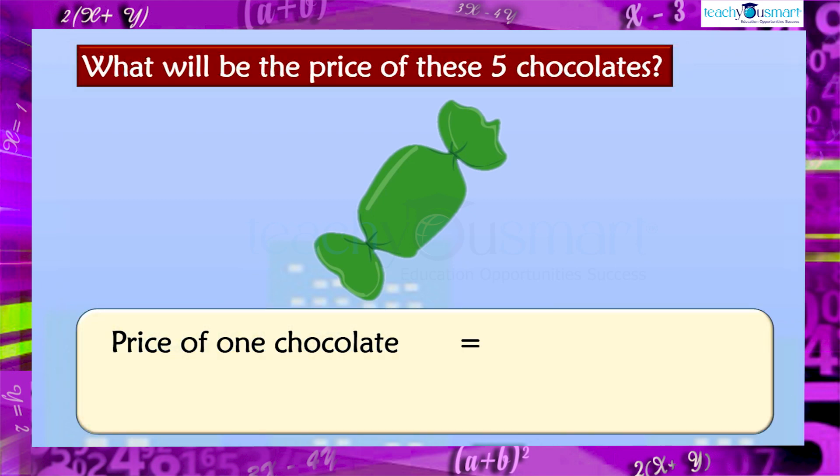Here, the price of one chocolate is unknown. So let's assume the cost of one chocolate is x. Then the price of five chocolates will be five times x, that is, five x.